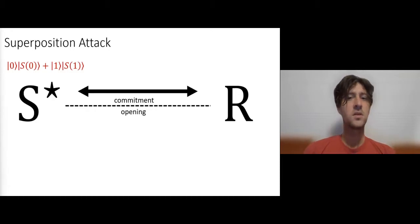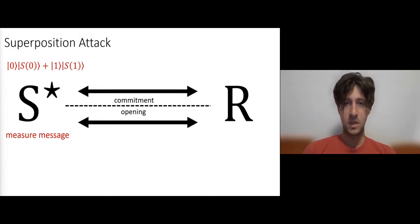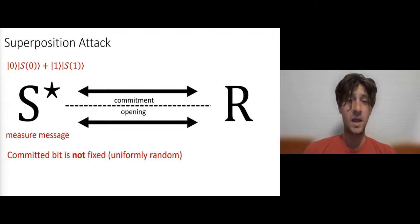Specifically, consider a malicious sender who creates a superposition of messages, say 0 and 1, and executes the honest sender, but in superposition. Then, right before it opens, it measures the message register and only then sends the open. So if the receiver is unitary, then the message is not really fixed after the commitment. It is, in fact, uniformly random.